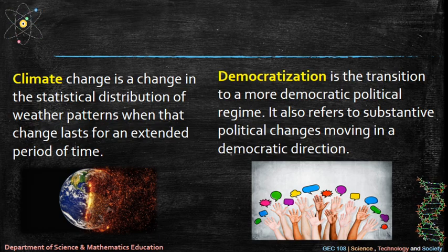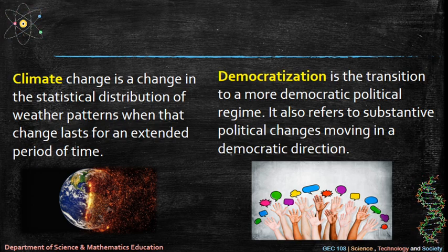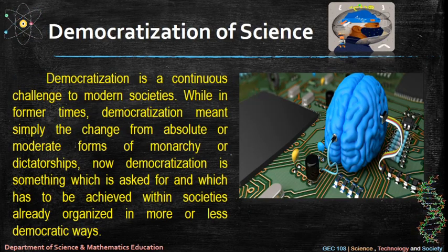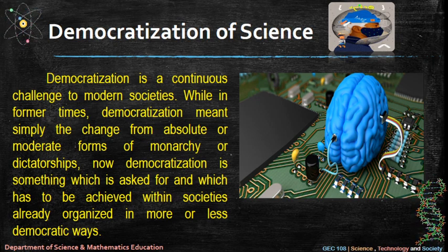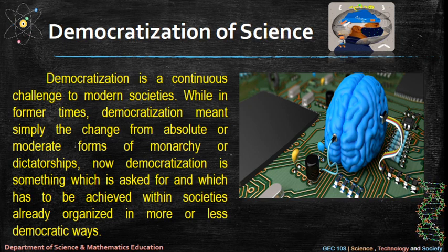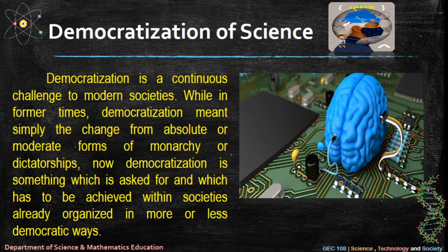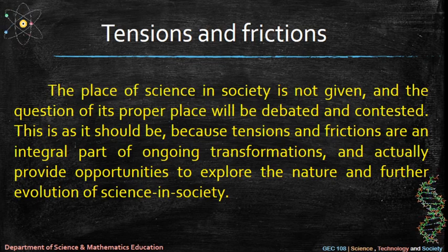Democratization is the transition to a more democratic political regime; it also refers to substantive political changes moving in a democratic direction. Democratization of science is a continuous challenge to modern societies. While in former times democratization meant simply the change from absolute or moderate forms of monarchy or dictatorships, now democratization is something which is asked for and must be achieved within societies already organized in more or less democratic ways.